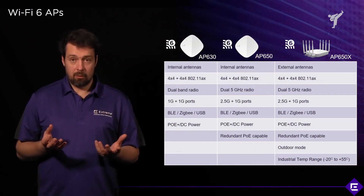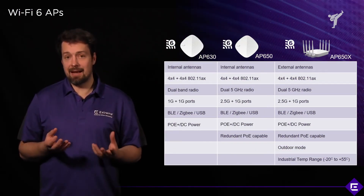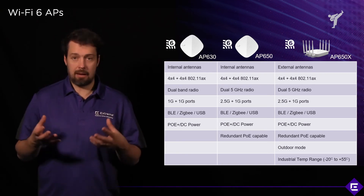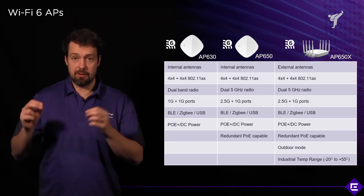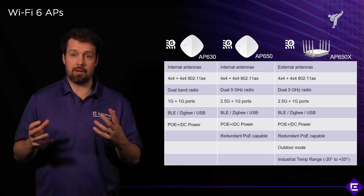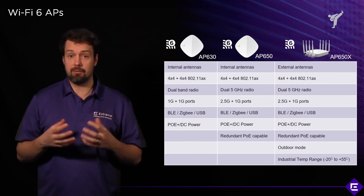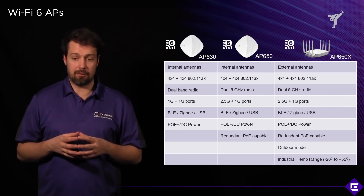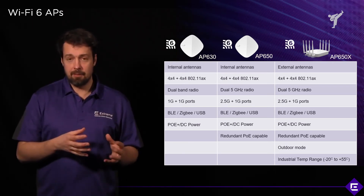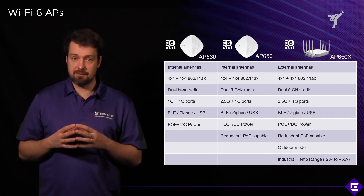Let's look at the Wi-Fi 6 or 802.11ax-enabled APs. For anyone who wants to future-proof their system, these will be the go-to platforms for a new or greenfield Wi-Fi environment. The first AP is the AP510C, with C standing for cloud.